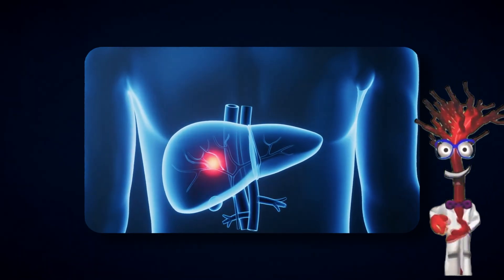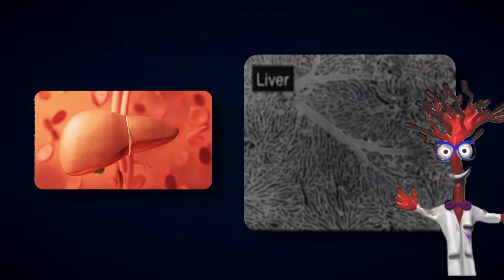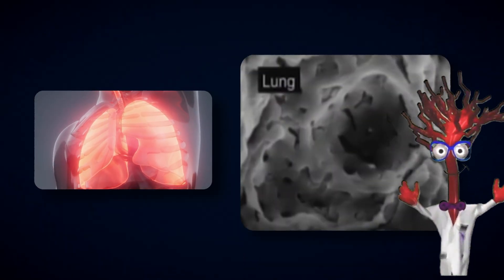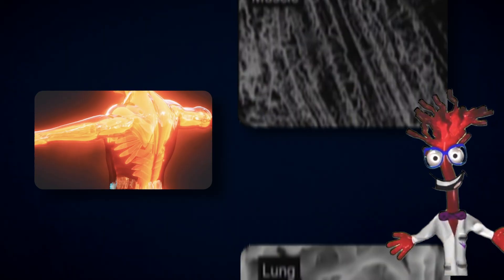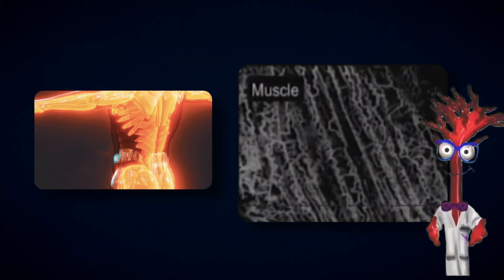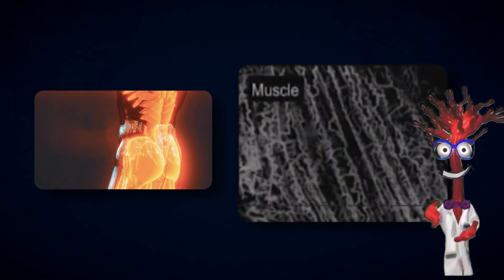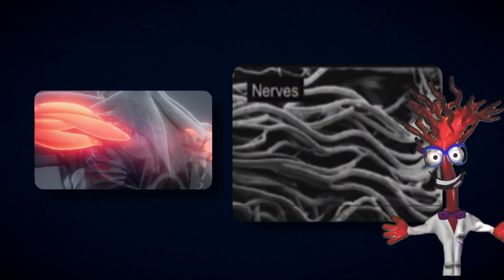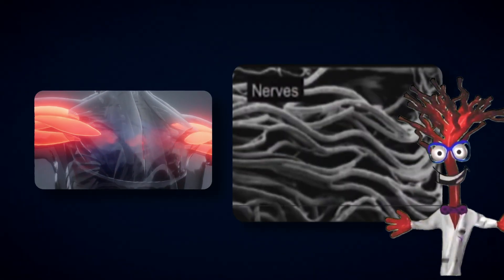In the liver, vessels organize into channels to detoxify blood. In the lungs, they line the air sacs that allow oxygen to move into your body. In muscle, they twist like corkscrews so you can contract and relax without closing off circulation. And along your nerves, they act like power cables, keeping those cells alive.